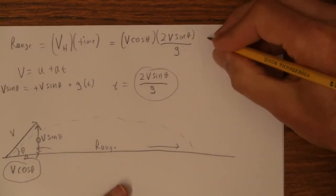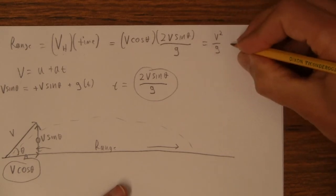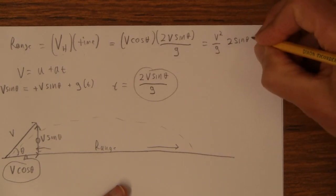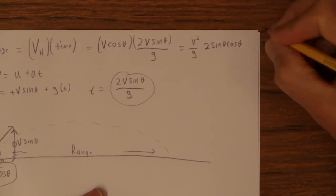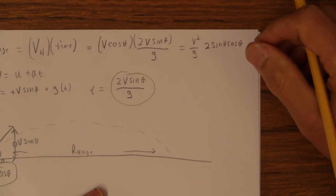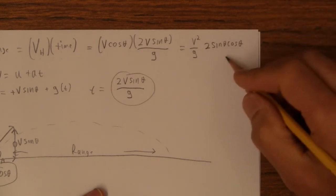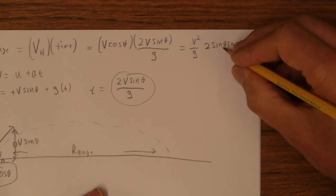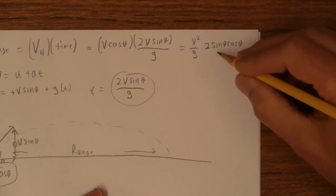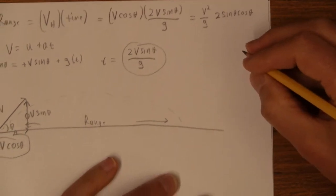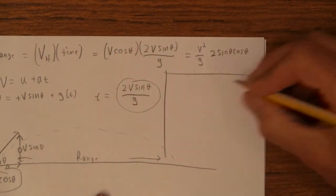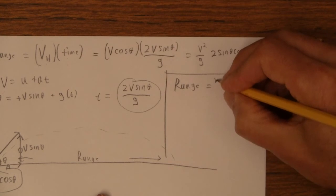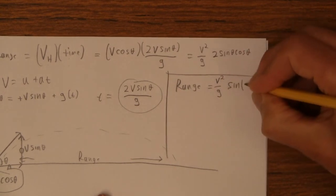This becomes V squared over g, and then we get 2 sine theta cos theta. Now, if you paid attention in that class, in trigonometry I guess, or wherever it is that you did the trig identities, that is actually the double angle theorem there. 2 cos theta, sine theta cos theta is sine of 2 theta. So our final formula becomes this, the range equals V squared over g times the sine of twice the angle.